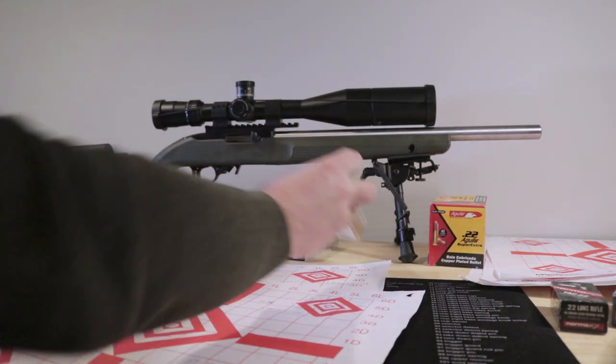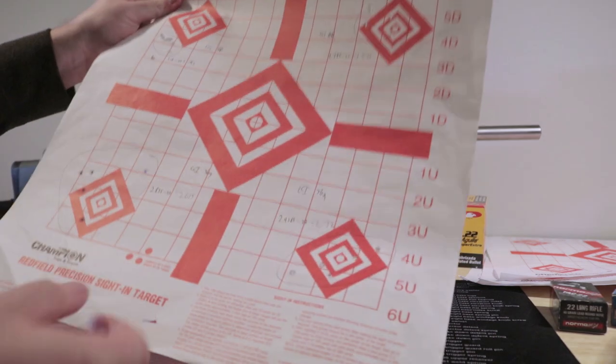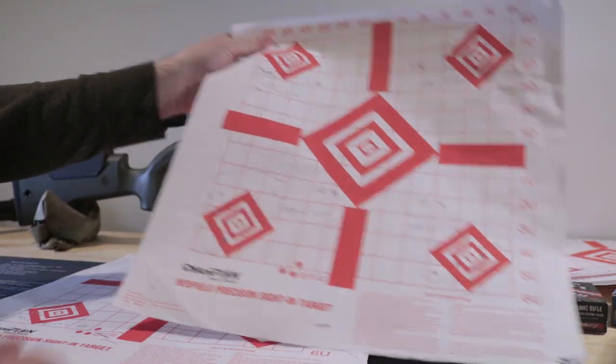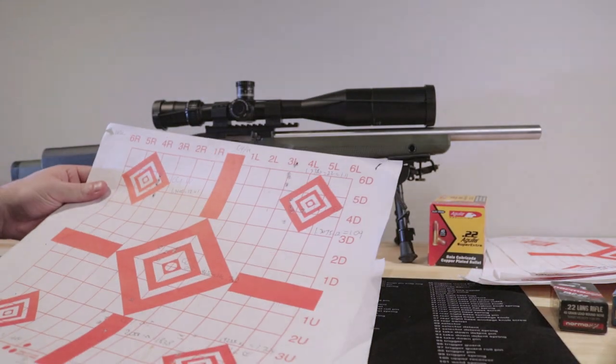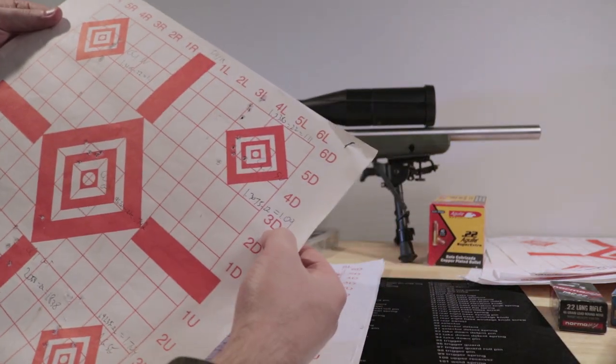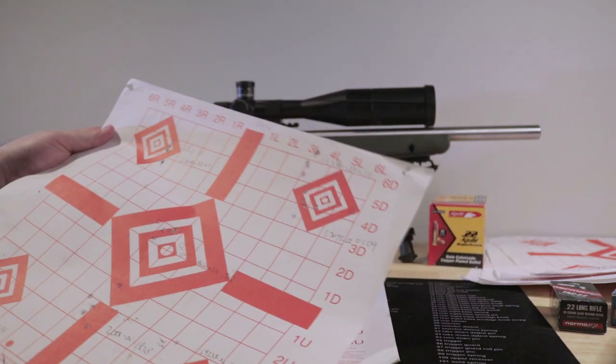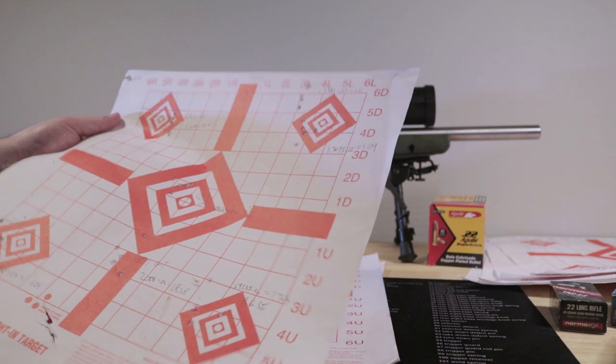36 grain mini mags did not like it. 2.7 and 2.6. And then we're back to the Standard Velocity again. We got an inch. 1.1, 1.1. And it's just consistently 1.1, 1.1 inches.